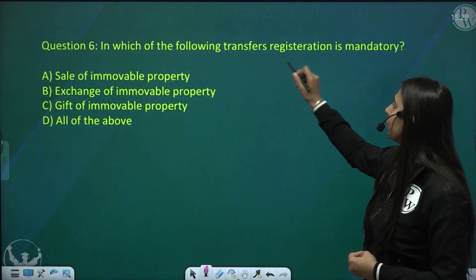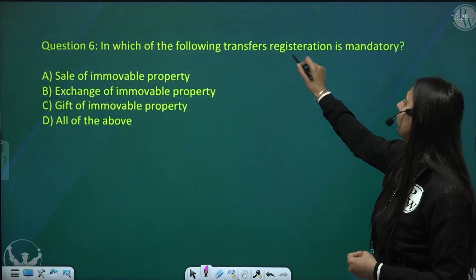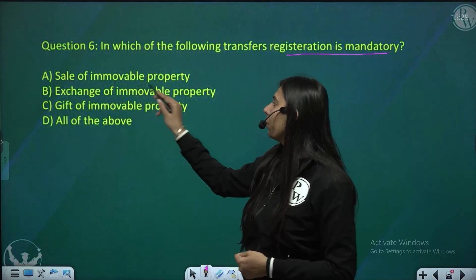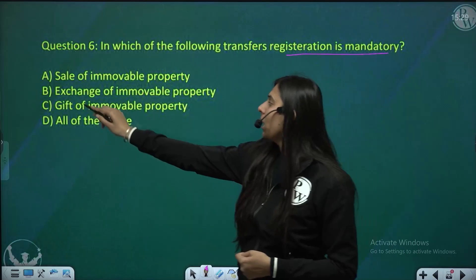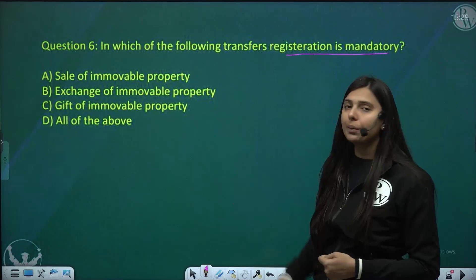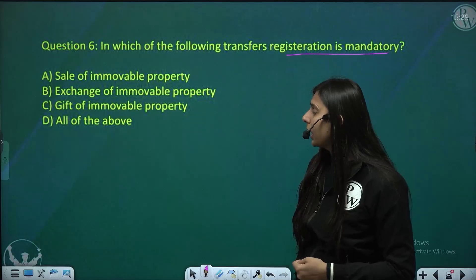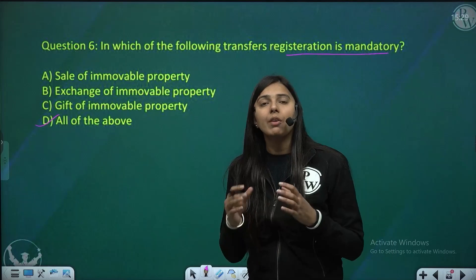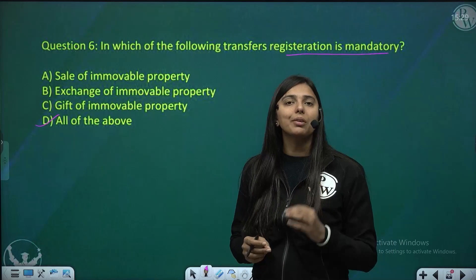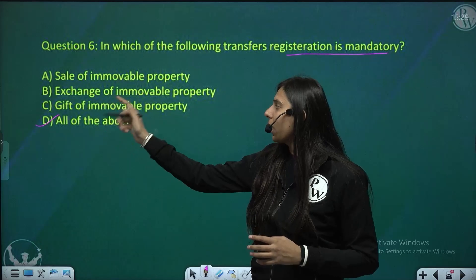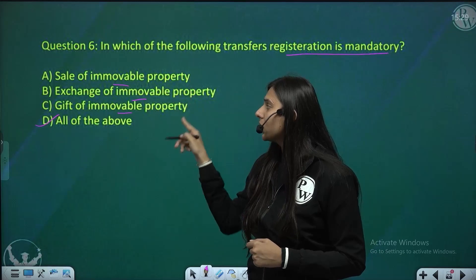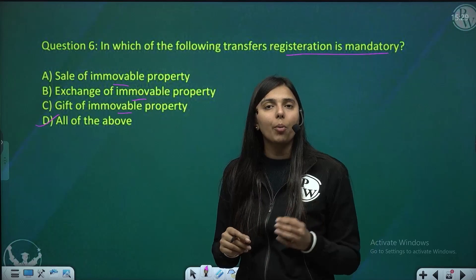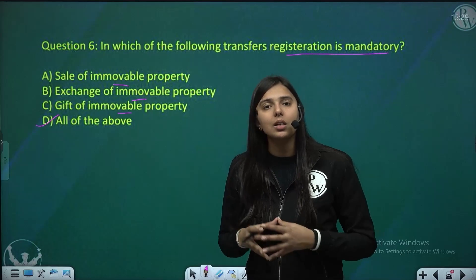Question 6: in which of the following transfers is registration mandatory? Option A — sale of immovable property. Option B — exchange of immovable property. Option C — gift of immovable property. Option D — all of the above. The correct answer is D, all of the above. Wherever there is a transfer of immovable property, registration is mandatory.